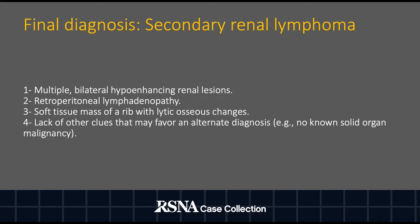The final diagnosis is secondary renal lymphoma. This is supported by the presence of multiple bilateral hypoenhancing renal lesions, the associated retroperitoneal lymphadenopathy, the rib soft tissue mass with osseous lytic change, and the lack of evidence that may favor an alternate diagnosis.